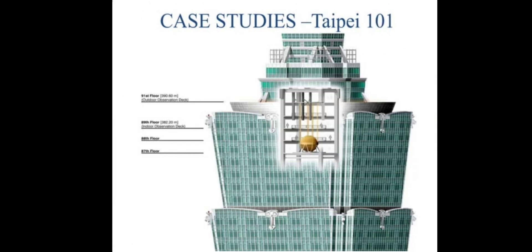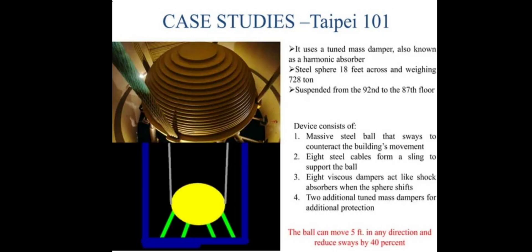The third case study is Taipei 101. It uses a mass damper, also known as a harmonic absorber, which absorbs harmonic shaking. A steel sphere 18 feet across and weighing 728 tons is used, suspended from the 92nd to the 87th floor. The device consists of massive steel balls that counteract building movement. Eight steel cables support the ball, eight viscous dampers act like shock absorbers when the sphere shifts, and two additional tuned mass dampers provide extra protection. The ball can move 5 feet in any direction and reduces sway by 40%.